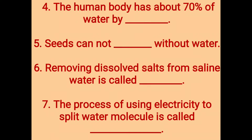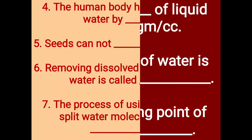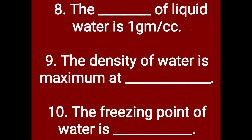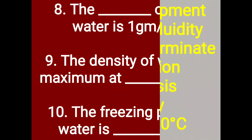Fifth: seeds cannot germinate without water. Sixth: removing dissolved salts from saline water is called desalinization. Seventh: the process of using electricity to split a water molecule is called electrolysis. Eighth: the density of liquid water is 1 gram per cc. Ninth: the density of water is maximum at 4 degrees Celsius. Tenth: the freezing point of water is 0 degrees Celsius.